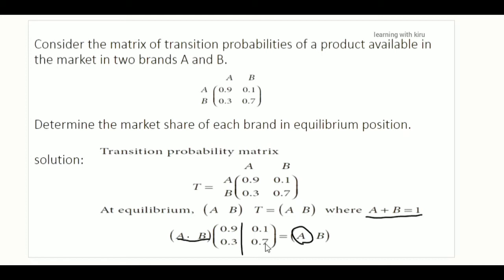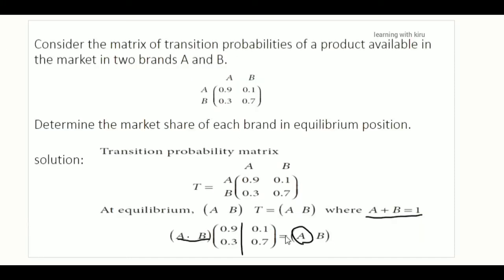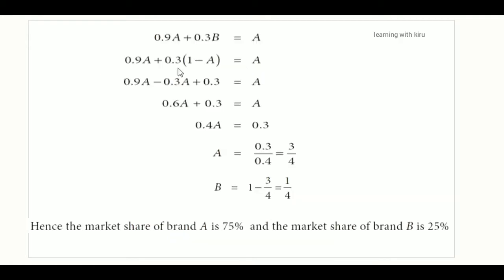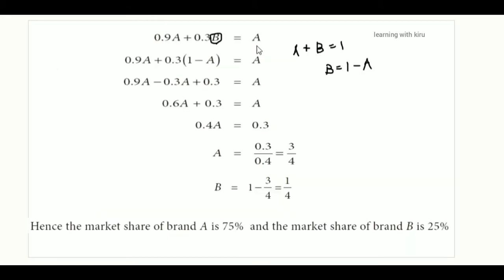In the transition probability matrices we have to work with decimals and round numbers. We set A equal to A. Since A plus B equals 1, B is equal to 1 minus A. So B is 1 minus A.